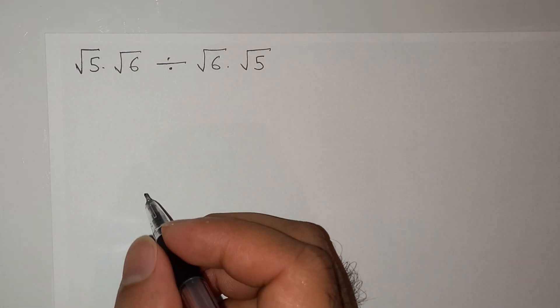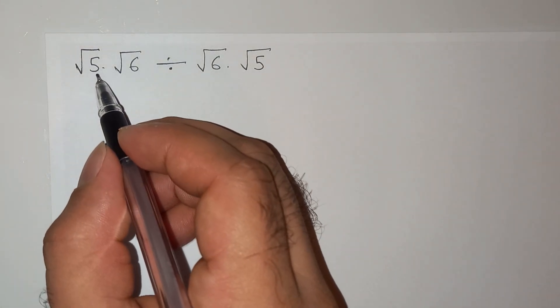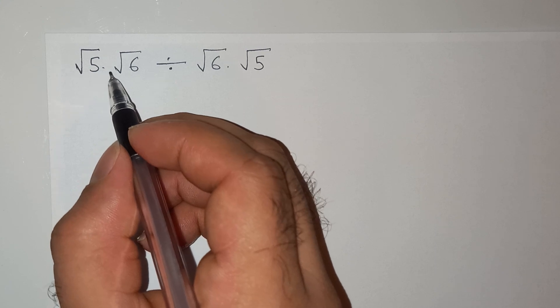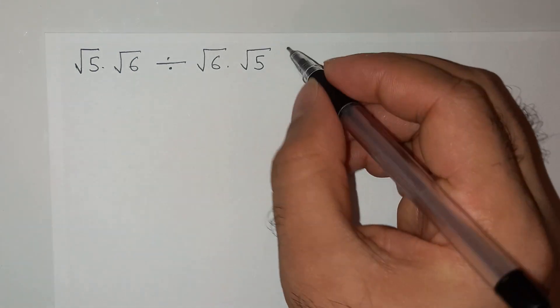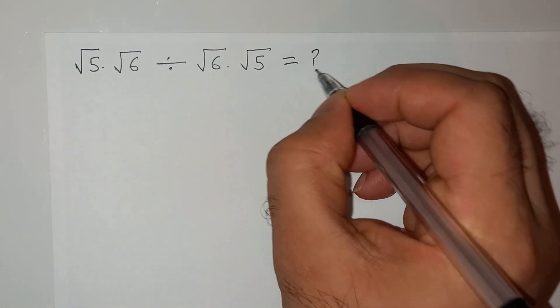Hi friends, welcome back to your channel. Today we have this question which is √5 multiplied √6 divided by √6 multiplied √5, and we have to find the value.